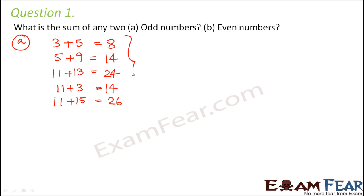Now do you observe something that every time you are adding up two odd numbers, the result is always an even number. Therefore, sum of two odd numbers is always an even number. So that is our first observation.